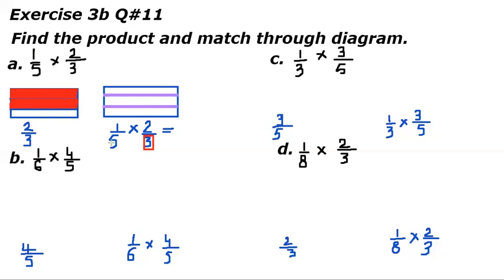Now look at the denominator of the first fraction which is five. We will cut this box into five parts but in a vertical pattern. Vertically we will cut it into five parts.